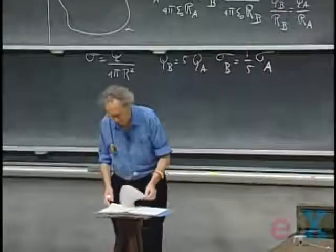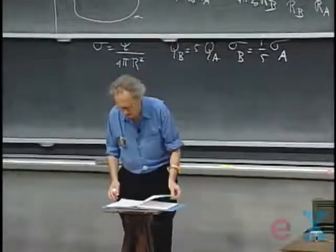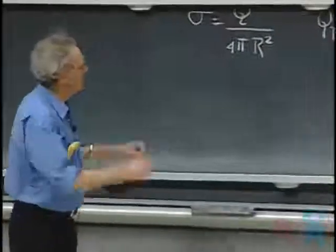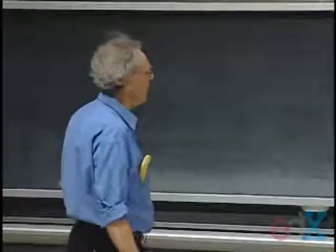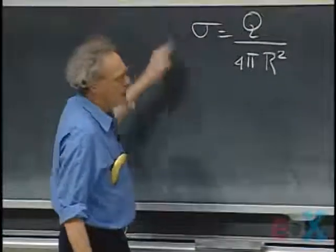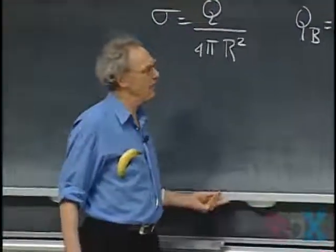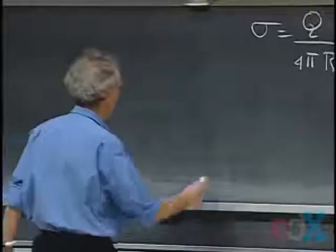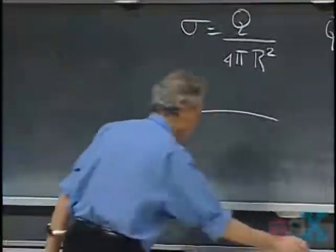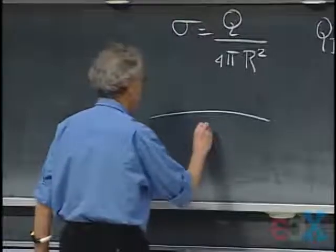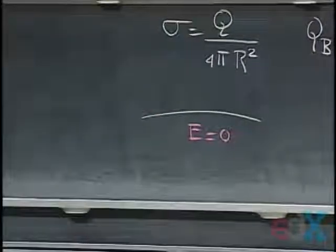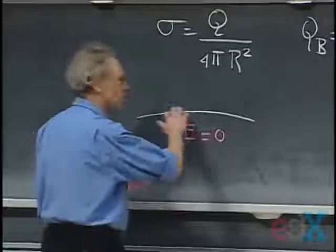You expect the highest surface charge density where the curvature is the highest — smallest radius — and that means the electric field will also be stronger there. That follows immediately from Gauss's law. If this is the surface of a conductor where the E field is zero inside, and there is surface charge here...